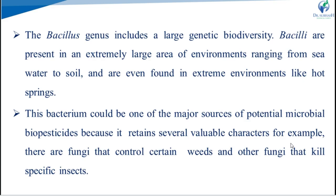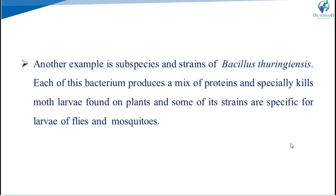This bacterium could be one of the major sources of potential microbial biopesticides because it retains several valuable characters. For example, there are fungi that control certain weeds and other fungi that kill specific insects. Another example is subspecies and strains of Bacillus thuringiensis — each of these bacteria produce a mix of proteins that specifically kills moth larvae found on plants, and some of its strains are specific for larvae of flies and mosquitoes.